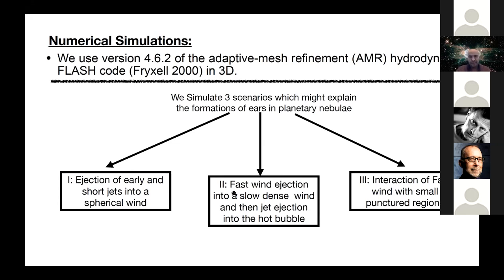The second one is the fast wind ejection into a slow dense wind and then jet ejection into the hot bubble. So it's actually the standard model that we know about the formation of a spherical planetary nebulae. We have a fast wind into a slow wind, then we have the inner shock, outer shock, and the contact continuity. As we already have this shape, we start a jet. So the jet penetrates into the hot gas in the x-ray and form an ear as we will see later. The third model is an interaction of fast wind with small punctured regions. So we only have the spherical fast wind with two small regions and then we have the ears in the planetary nebulae.